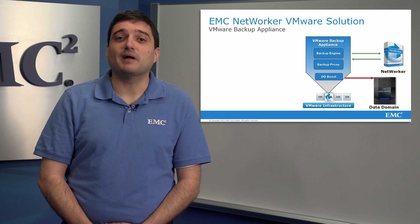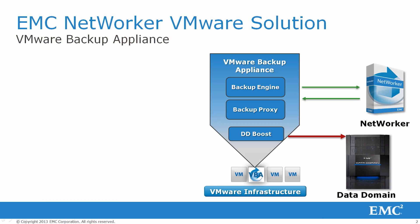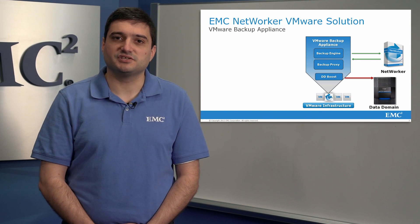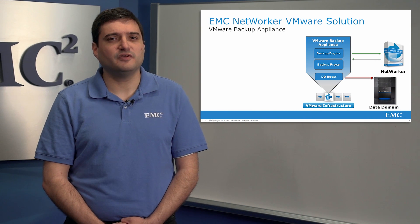The NetWorker VMware Backup Appliance, shown here as the VBA, is the engine within the NetWorker solution for interfacing with the vSphere API to execute disk-based backups. The proxy is the power behind the new VADP implementation for NetWorker. Also included within the VBA is the integration of Data Domain Boost for best-in-class client-direct deduplication. There are many advantages to the VBA, and I'll describe just a few of them for you here.